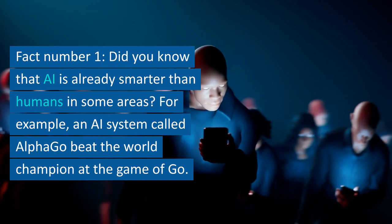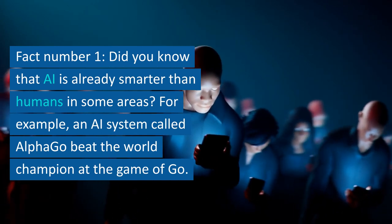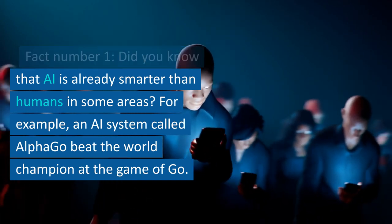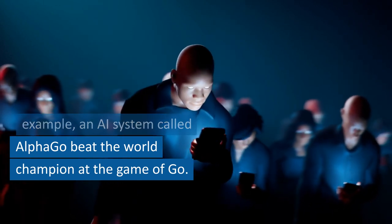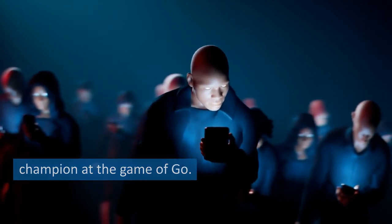Fact number 1. Did you know that AI is already smarter than humans in some areas? For example, an AI system called AlphaGo beat the world champion at the game of Go.